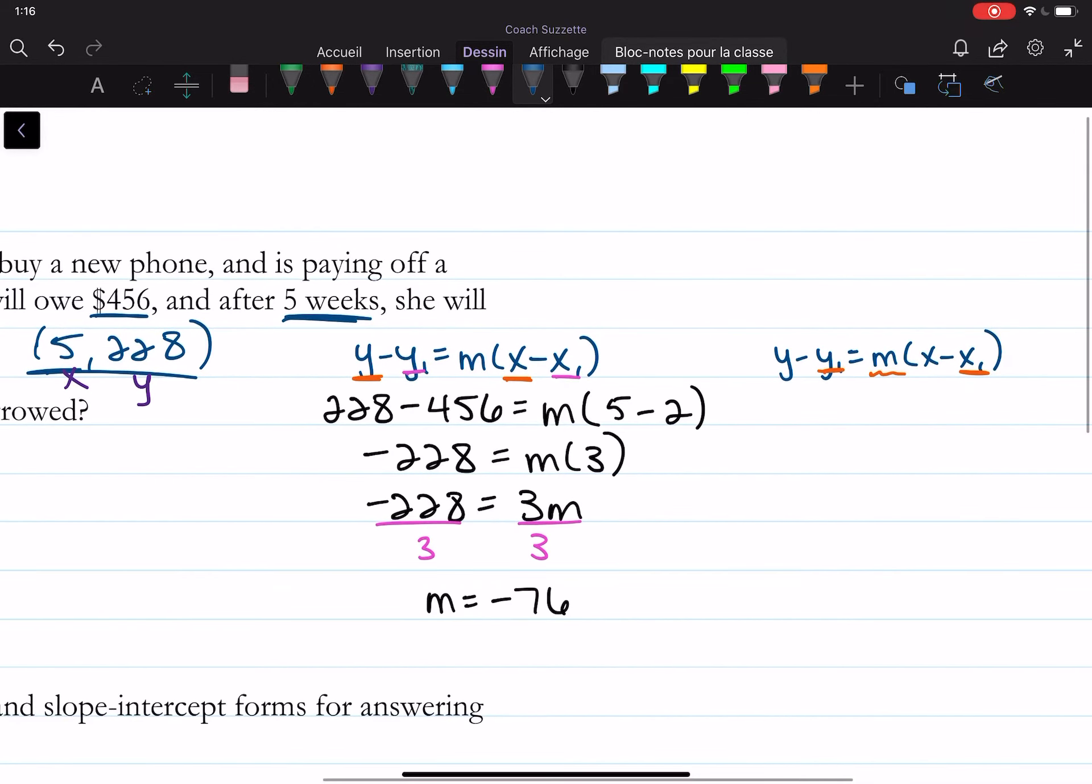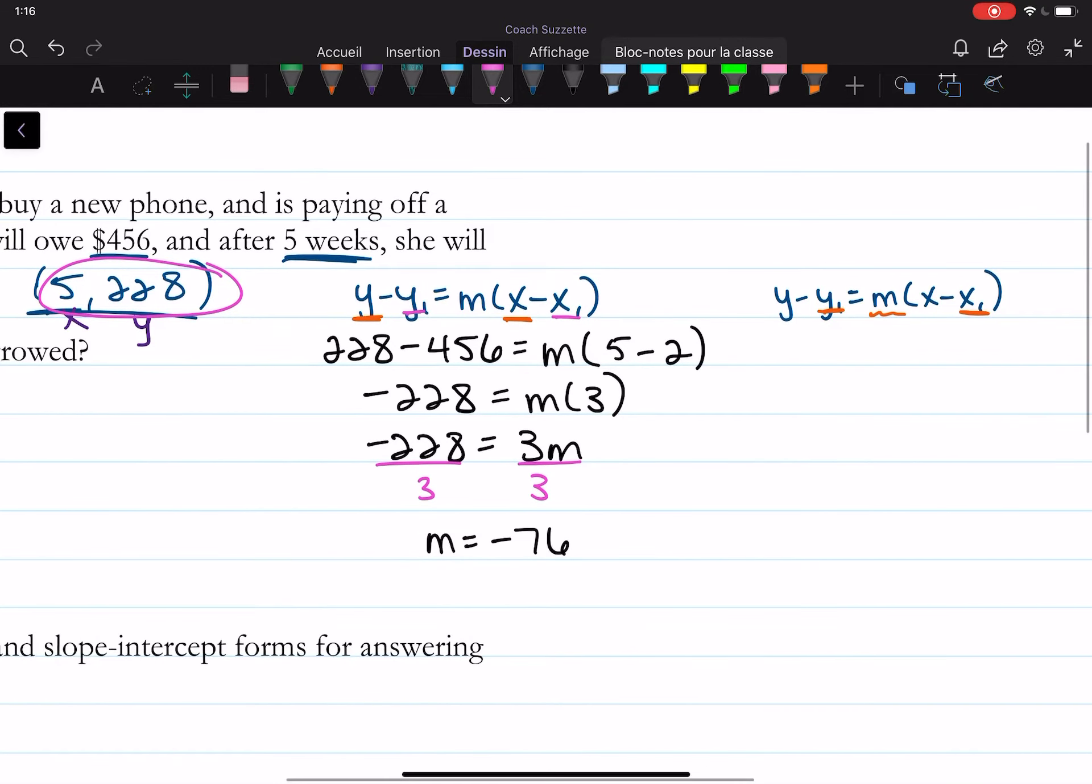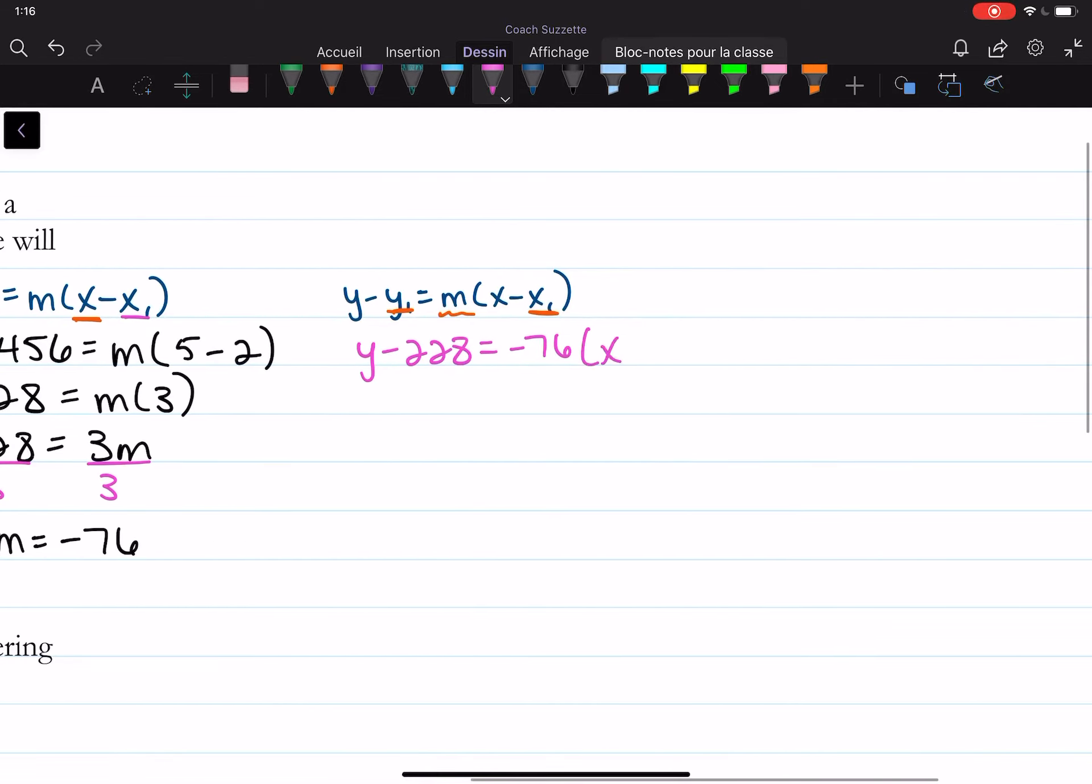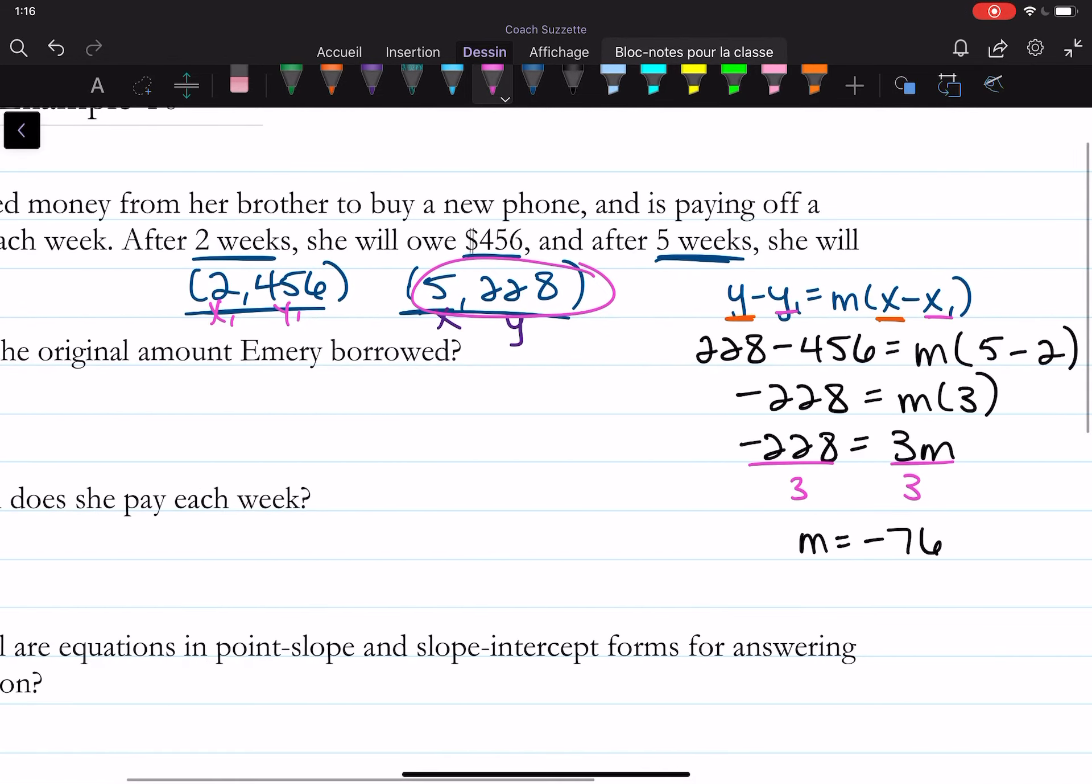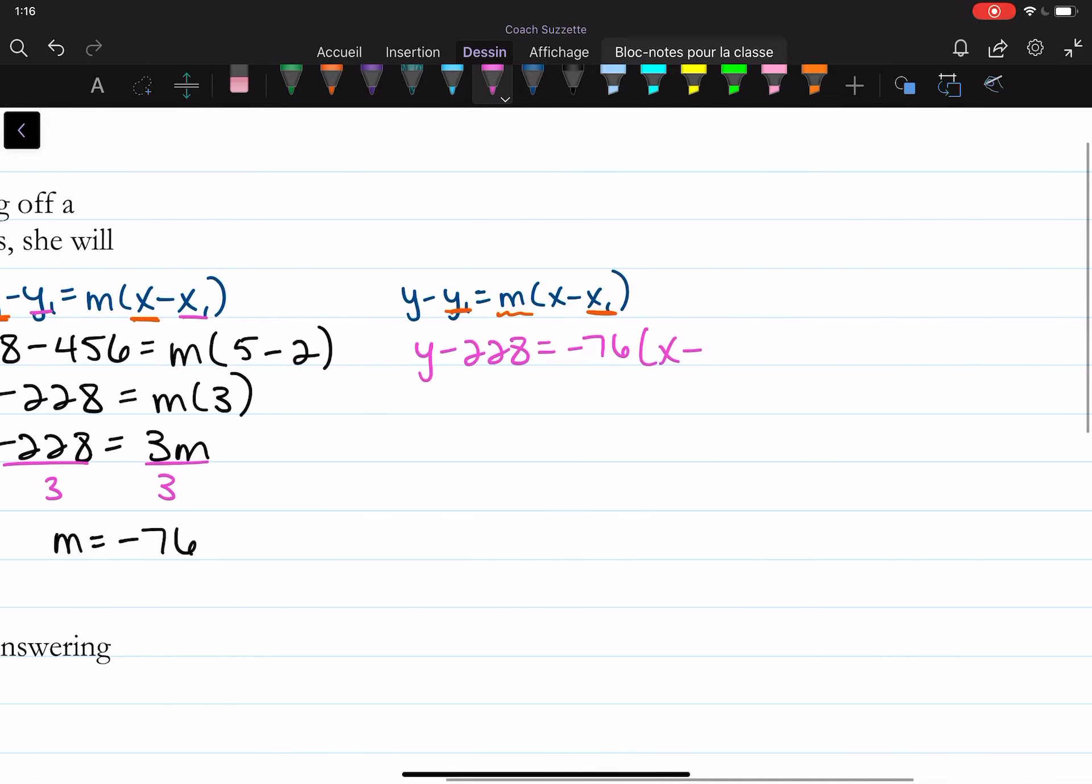Let's say I want to use this point as my x-sub-1 and y-sub-1. So that means I'm going to have y minus 228 is equal to my slope negative 76 times the quantity x minus, what was my y? My x, 5.